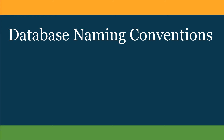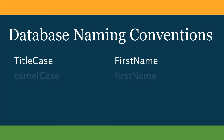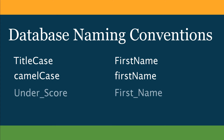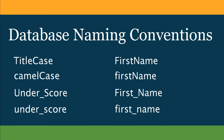They are title case, in which the first letter of each word is capitalized; camel case, in which the first word is lowercase and all of the following words are title case with a capital letter; and underscore, in which each of the words is separated with an underscore and the words are each capitalized, or all lowercase, but there's an underscore separating them.